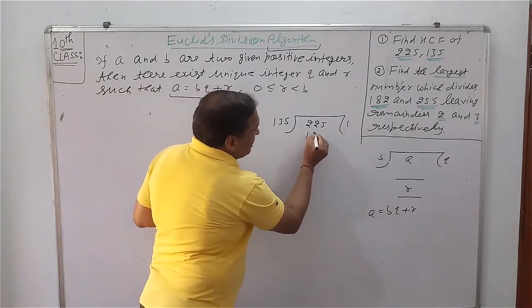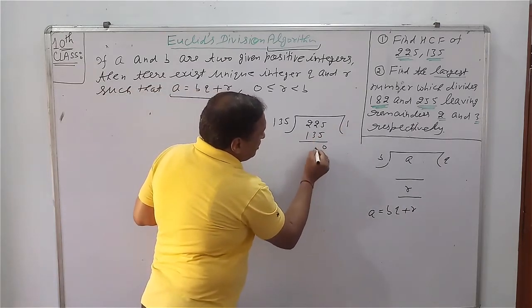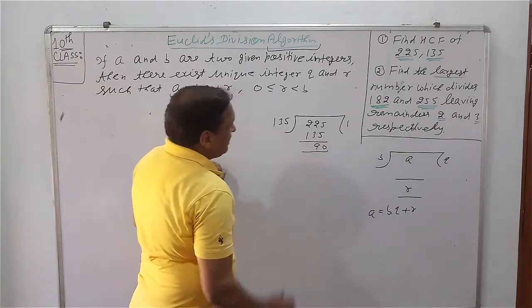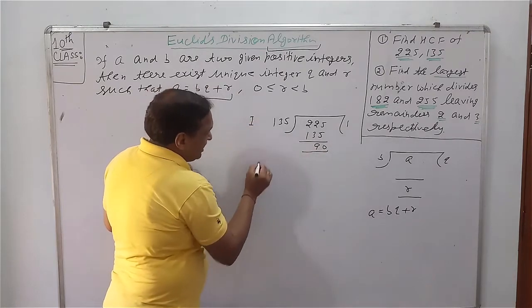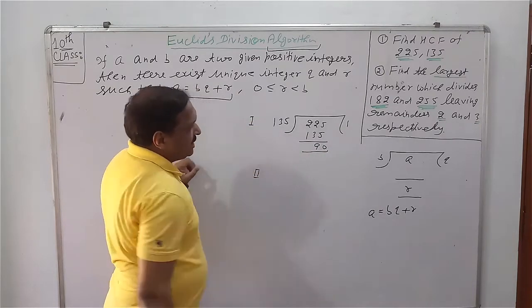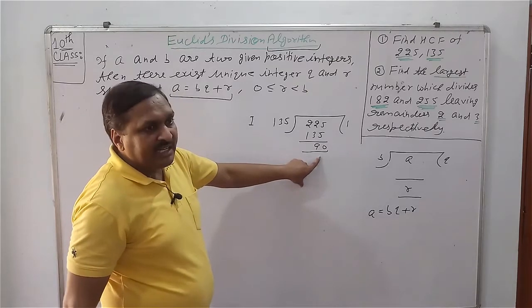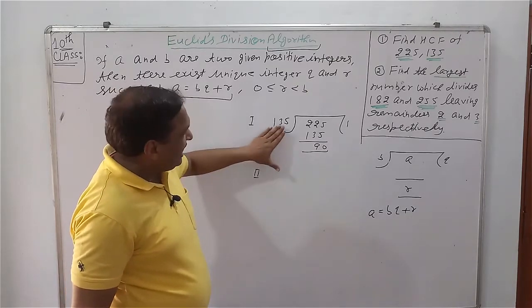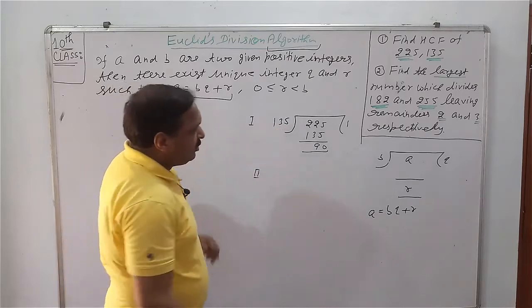So 1, 135, 90. This is our first step. In second step, now we will take remainder as divisor and previous divisor as new dividend.